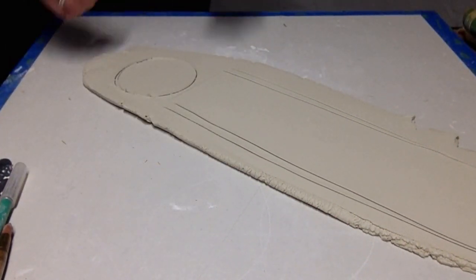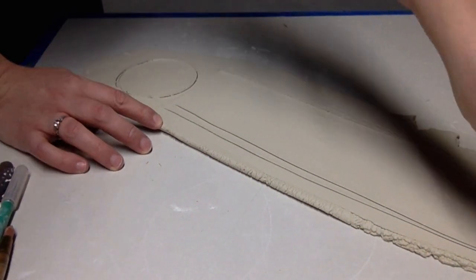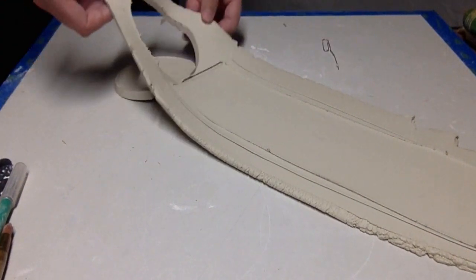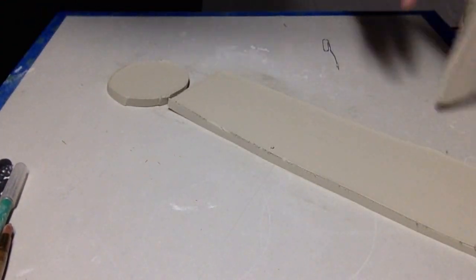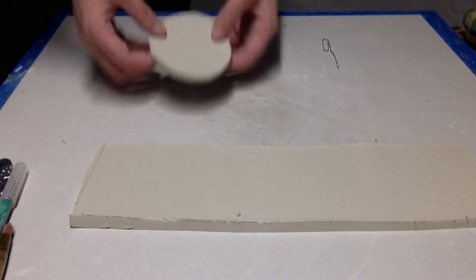Next I use the paperclip to actually cut into the clay following the lines that I made. And then just get rid of the scrap, put it off to the side, and you have your bottom circle and the rectangle that will become the walls.